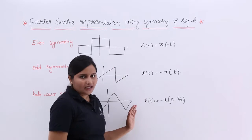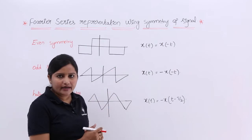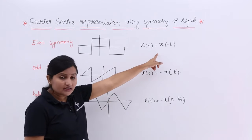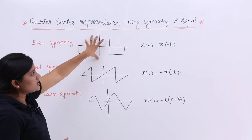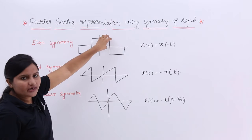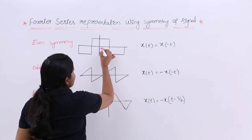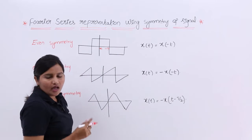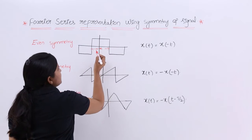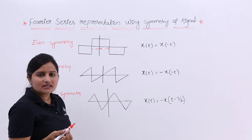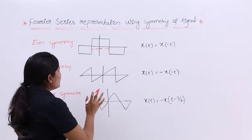Now you can see the equations. If x(t) is equivalent to x(−t), then the signal is said to be even symmetric. For example, considering this signal and a half period duration — here I am considering this half period from here to here as x(t). If you consider x(−t), the x(−t) is this portion here. These two are the same: x(t) and x(−t) are equal, so this is an even symmetric signal.